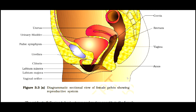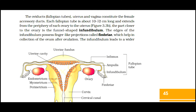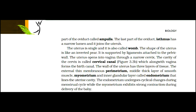The oviducts, which are fallopian tubes, uterus, and vagina constitute the female accessory ducts. Each fallopian tube is about 10–12 cm long and extends from the periphery of each ovary to the uterus, as given in figure 3.3b. The part closer to the ovary is the funnel-shaped infundibulum. The edges of the infundibulum possess finger-like projections called fimbriae, which help in collection of the ovum after ovulation. The infundibulum leads to a wider part of the oviduct called ampulla. The last part of the oviduct, isthmus, has a narrow lumen and it joins the uterus. The uterus is single and is also called the womb. The uterus opens into the vagina through a narrow cervix. The cavity of the cervix is called the cervical canal, as given in figure 3.3b, which along with the vagina forms the birth canal.